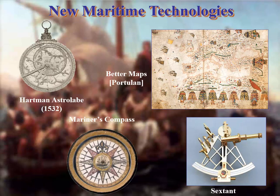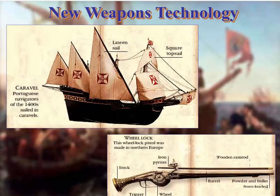Some of the maritime technology contributing to exploration includes cartography, the astrolabe — which allows you to plot longitude and latitude using the stars — the compass, which allows you to find north (the Chinese had this long before, calling it the south-pointing needle during the Tang Song period), and the sextant, which also helps in navigation. New weapons technology included the caravel, the lateen sail, and pistols and guns, which came through China since the Chinese invented gunpowder and were the first to develop any type of firepower.